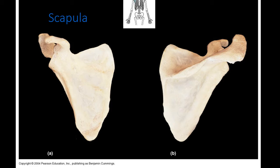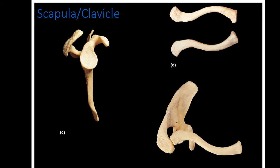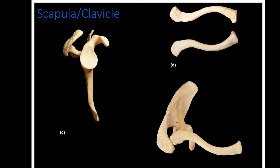The acromion is more of a superior structure in that it rolls up onto the top of the scapula. On the anterior portion, we have the coracoid process, which sticks out anteriorly. From the side view, we can see the supraspinous fossa and the infraspinous fossa — both will be filled in by muscles — as well as the subscapular fossa. We can also see the acromion process, the coracoid process, and the glenoid cavity.